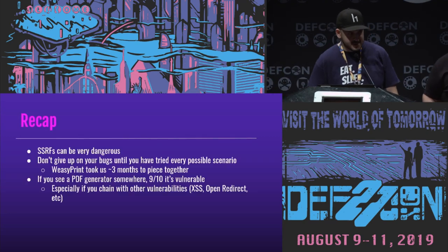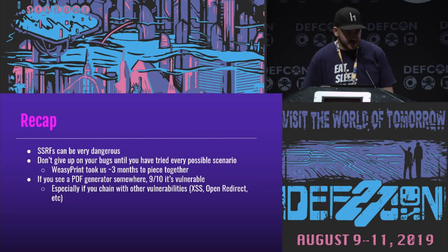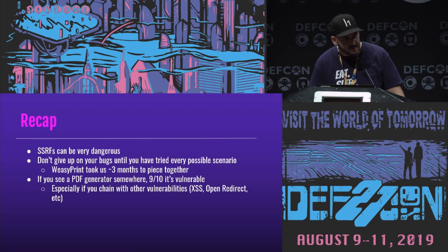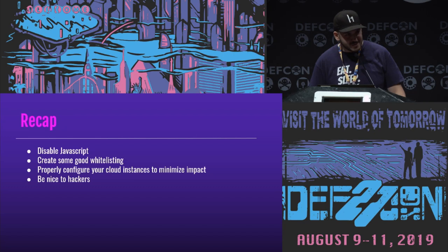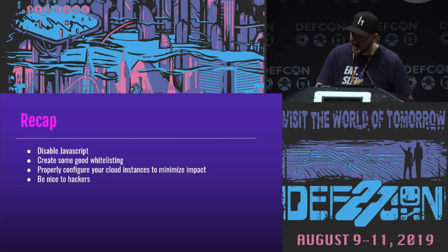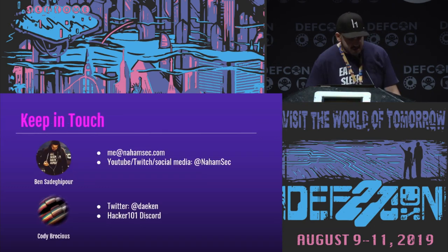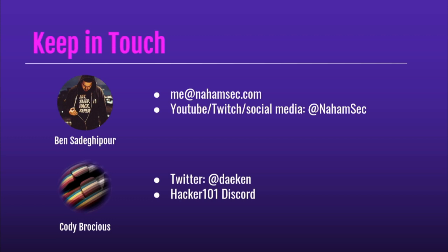Quick recap: SSRF can be done with any dangerous fetch — don't stop at an external fetch, see what else you can do. Don't give up your bugs — WheezyPrint took me three months and a bunch of rides in New York City. If you see a PDF generator, I promise you it's usually vulnerable; you just have to find the right angle. Disable JavaScript in your PDF generators — you don't need it. Create whitelisting and blacklisting, limit the exposure to your instance, and properly configure your cloud instances so keys aren't being leaked. Please be nice to hackers. I'm Ben Sadeghipour and this is Cody — keep in touch, tweet at us, email us. If you ever find an SSRF you can't exploit, we'd love to look at it and extend on this research. Thank you.